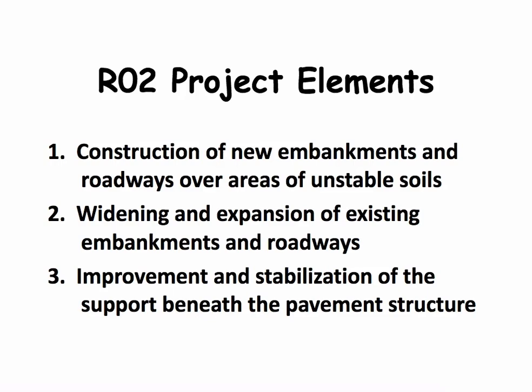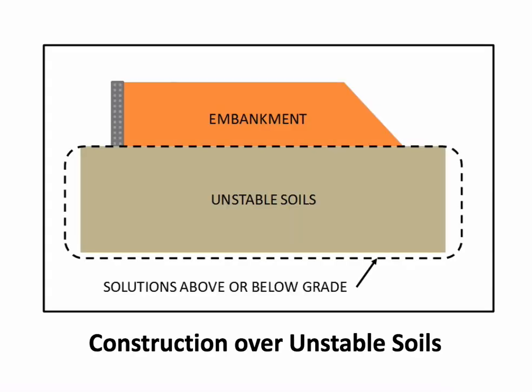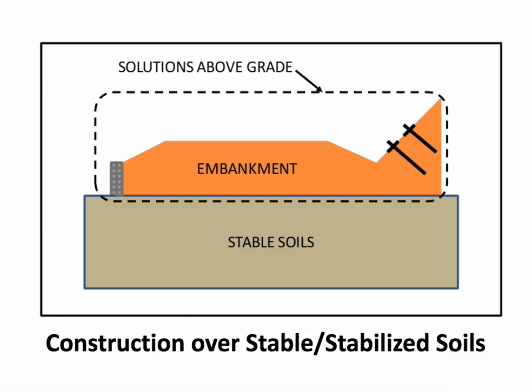Our project had three elements. It covers construction of new embankments and roadways over areas of unstable soils, widening and expansion of existing embankments and roadways, and improvement and stabilization of the support beneath the pavement structure. The first element is construction over unstable soils — working in the area beneath an embankment or retaining wall, improving problem soils so we can build on them. The second is construction over stable or stabilized soil, including retaining structures, landslide stabilization using ground anchors or soil nails.